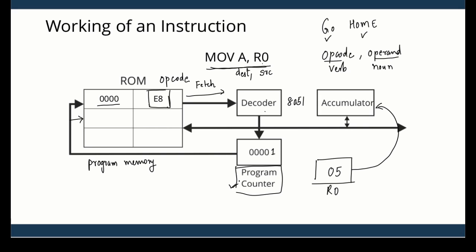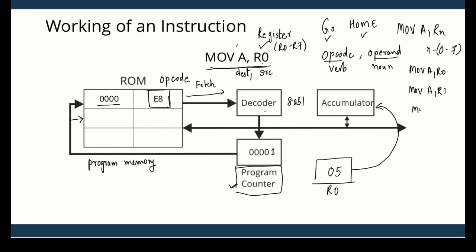This instruction MOV A, R0 is called register addressing, because R0 is a register. As discussed in the previous lecture, R0 to R7 are special memory locations called registers. The data is moving from R0 to A. You can write any instruction of the form MOV A, Rn, where n stands for 0 to 7 — so MOV A, R0, MOV A, R1, MOV A, R2, and so on up to MOV A, R7.